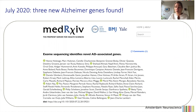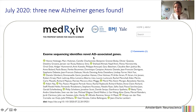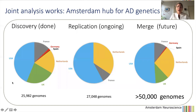In July of this year we made our first publication, showing that there are three new genes associated with Alzheimer's disease. You can also see a large number of authors — that's because all these people from different countries are collaborators, and their efforts are very important. We found three new Alzheimer's genes, and possibly some additional genes, but we need to do more analysis to confirm those.